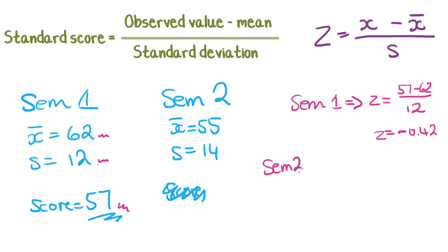What about for semester 2? So we do x minus the mean of x divided by the standard deviation. z equals x, our observed value for semester 2 is also 57, minus the mean of x, this time it's 55, all divided by the standard deviation, this time it's 14. And that works out to positive 0.14.